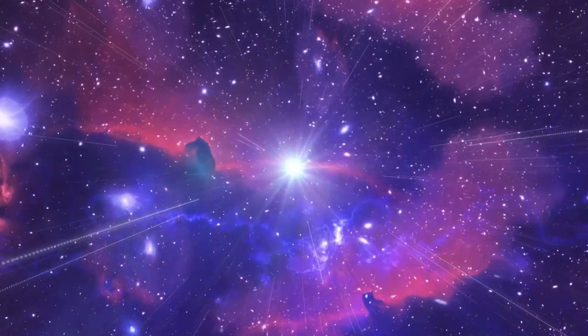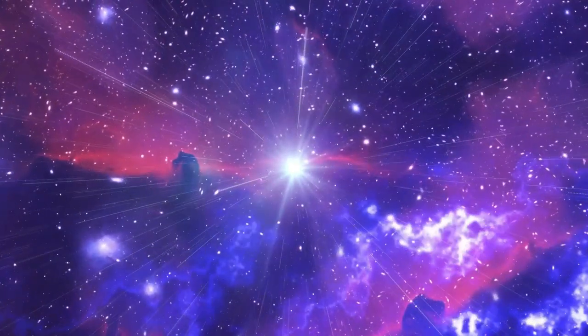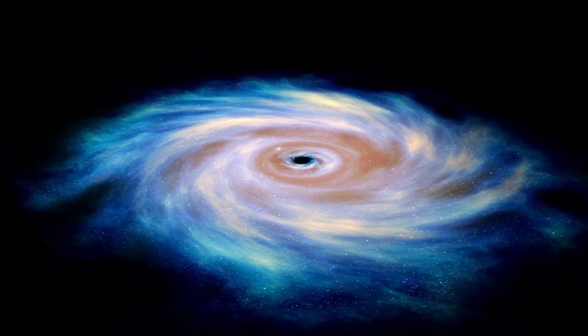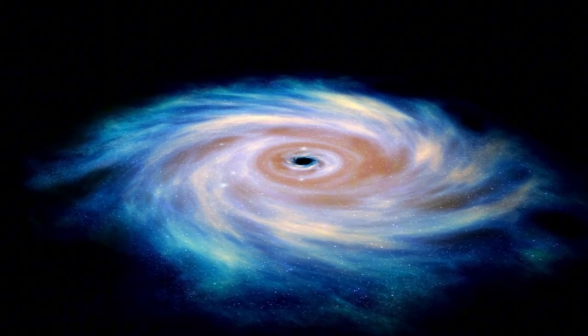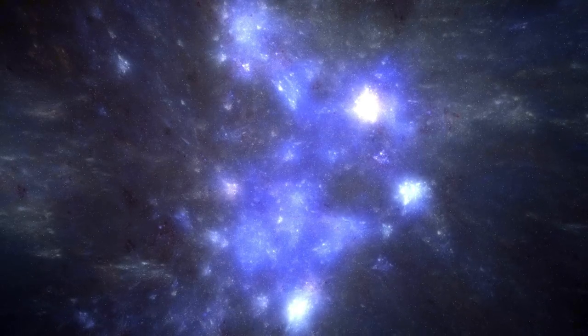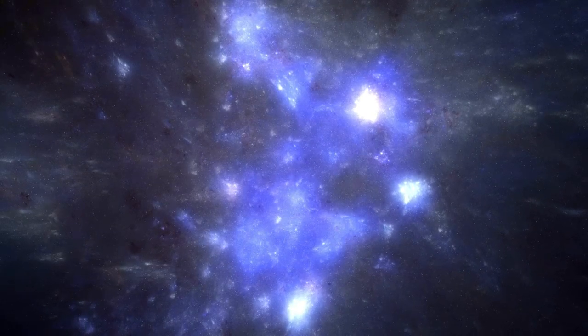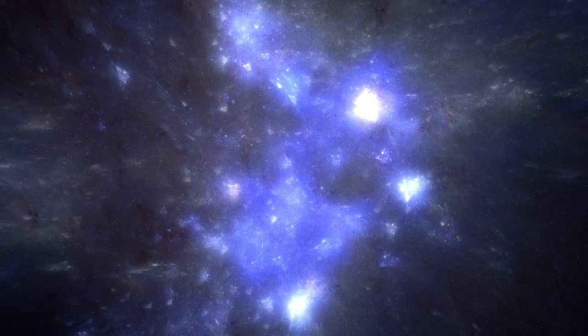The expansion started with something called cosmic inflation, where the universe grew incredibly fast, faster than the speed of light. It's like the very fabric of space itself was stretching, and everything in it was stretching along with it. This cosmic inflation helped shape the universe by making things more uniform and setting the stage for galaxies, stars, and other cosmic structures to form.